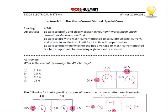Today we will discuss some special cases of the mesh current method. Recall that the mesh current method was a systematic application of Kirchhoff's voltage law. Today we will examine what happens when you have a current source in the circuit. But before we get started on the special cases, let's do a mini review of the mesh current method with a problem taken from the FE review book.